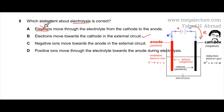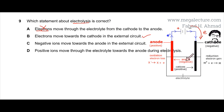The first statement — electrons move through the electrolyte from the cathode to the anode — is incorrect, because in the solution it's the ions that are traveling, not the electrons. The electrons are only traveling in the wire. There are no electrons in the electrolyte itself.